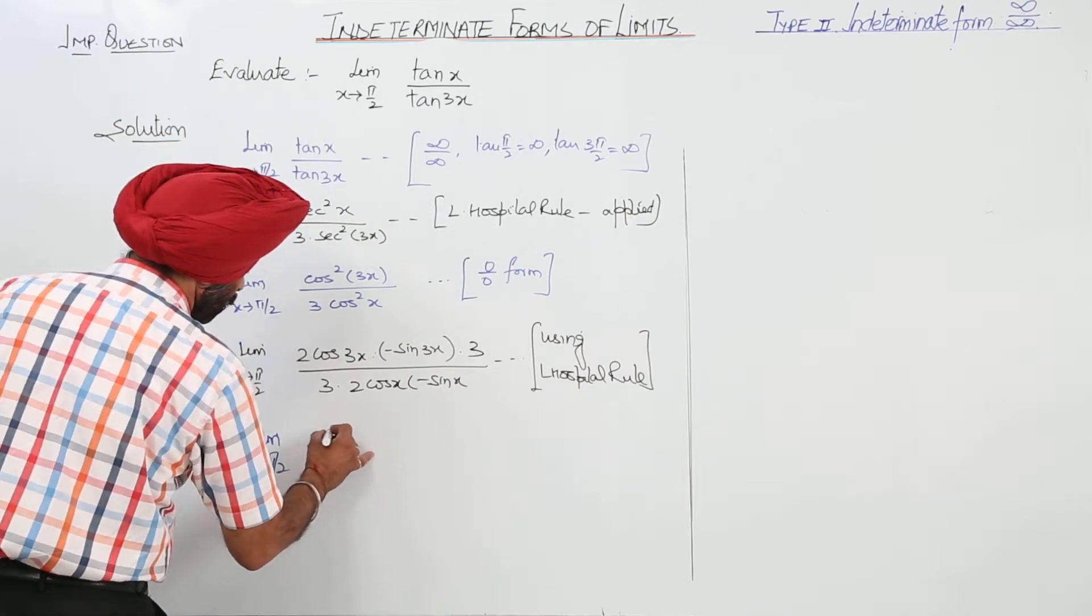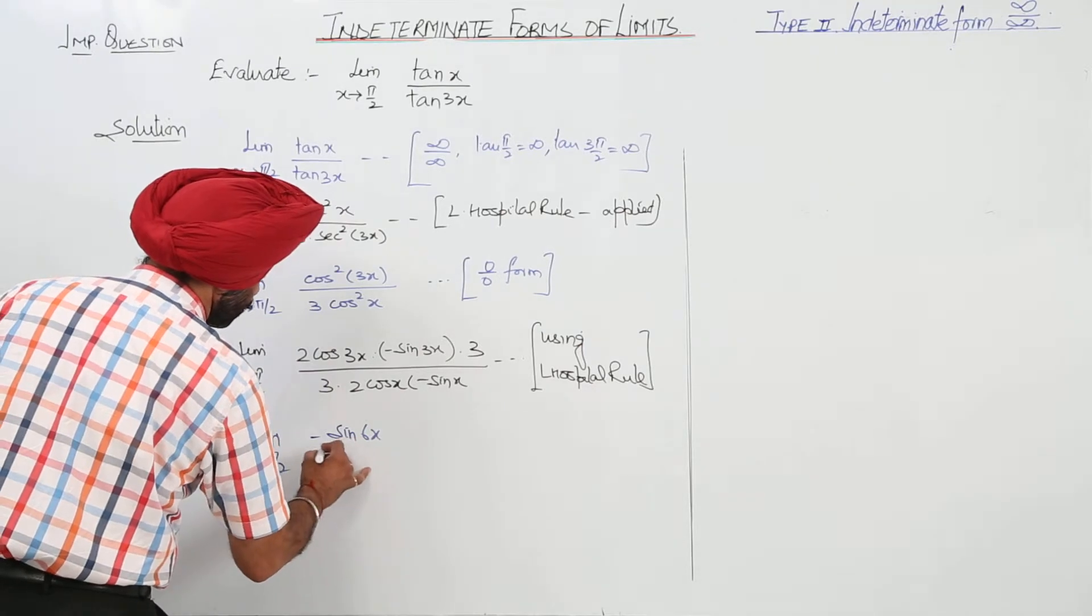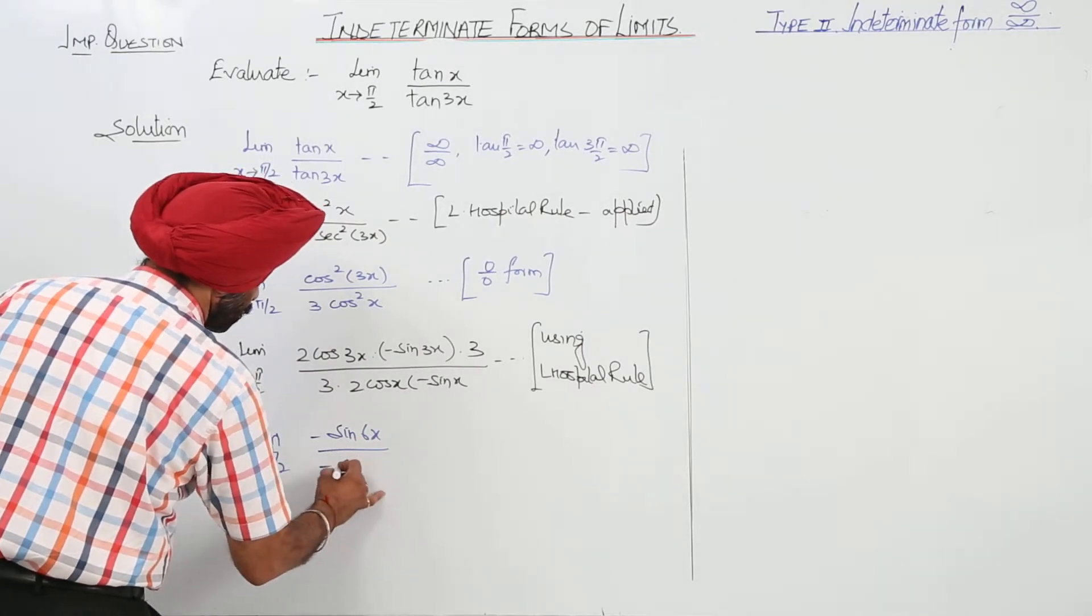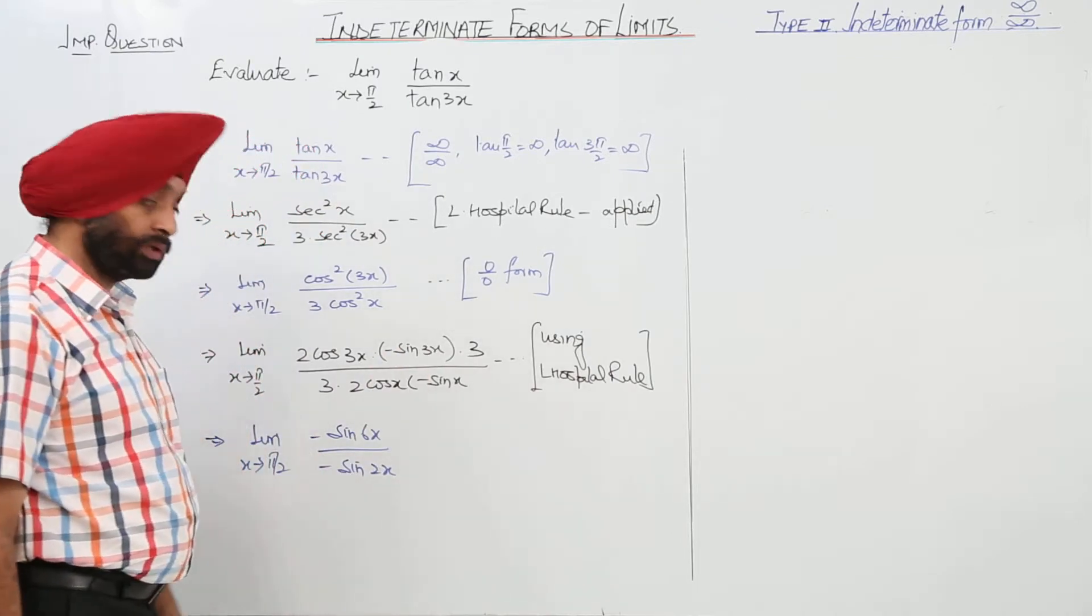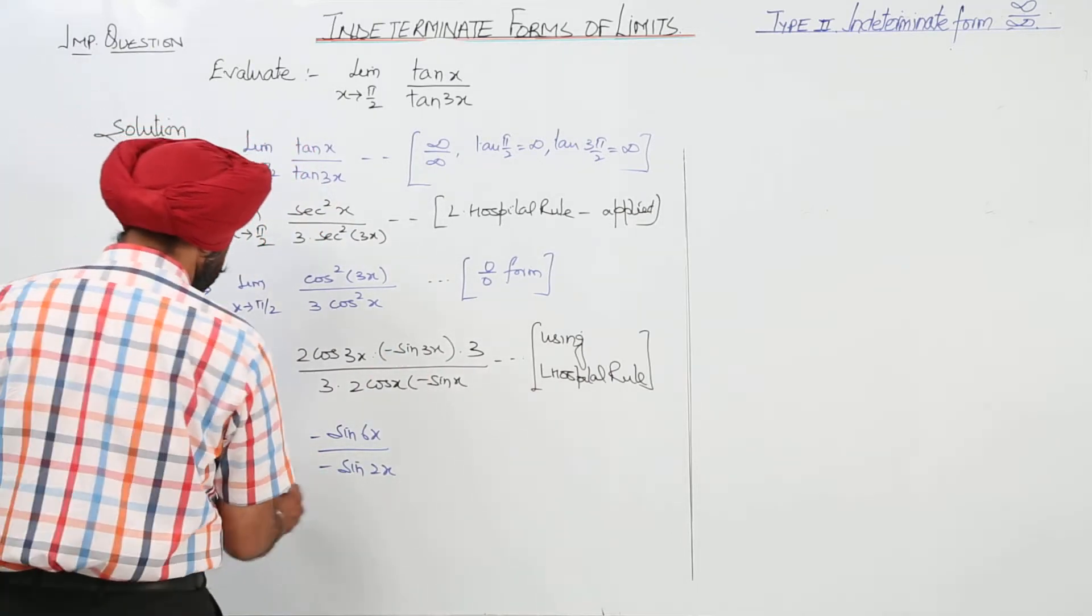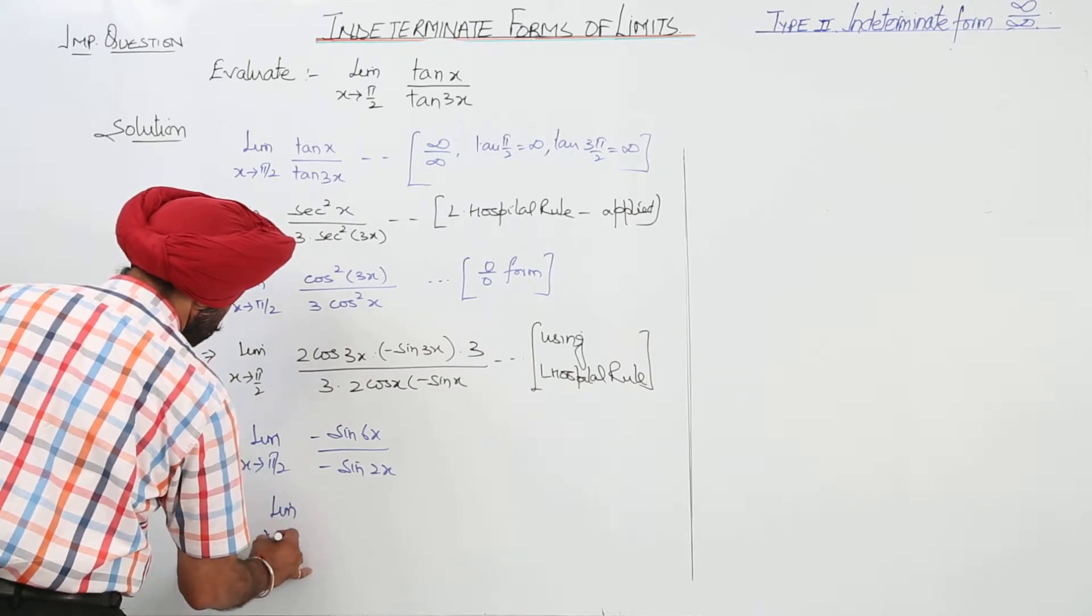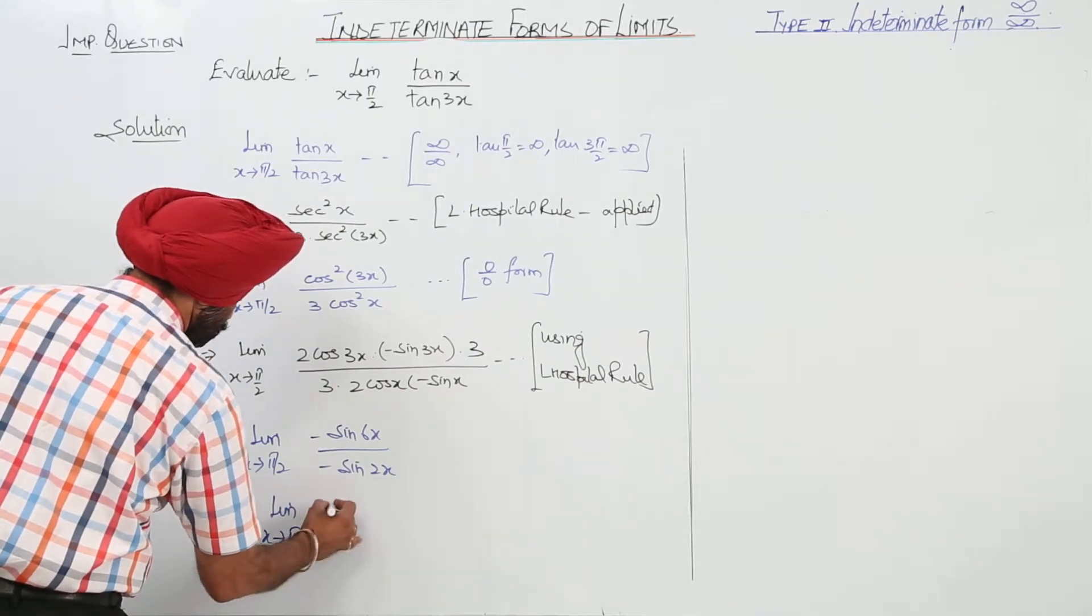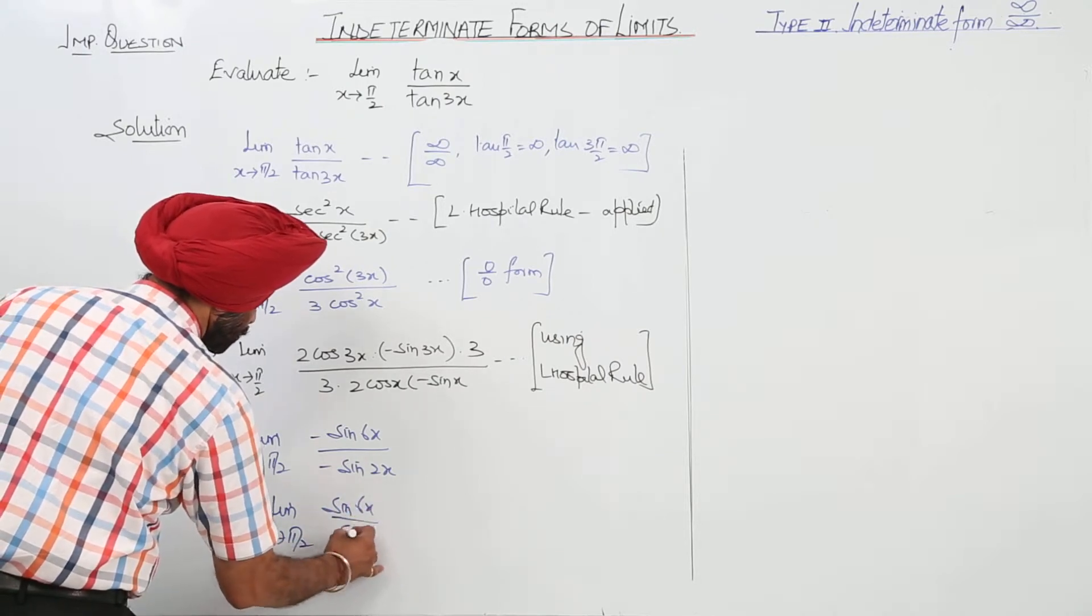So we are left with negative sin(6x) upon negative sin(2x), which simplifies to sin(6x) upon sin(2x).